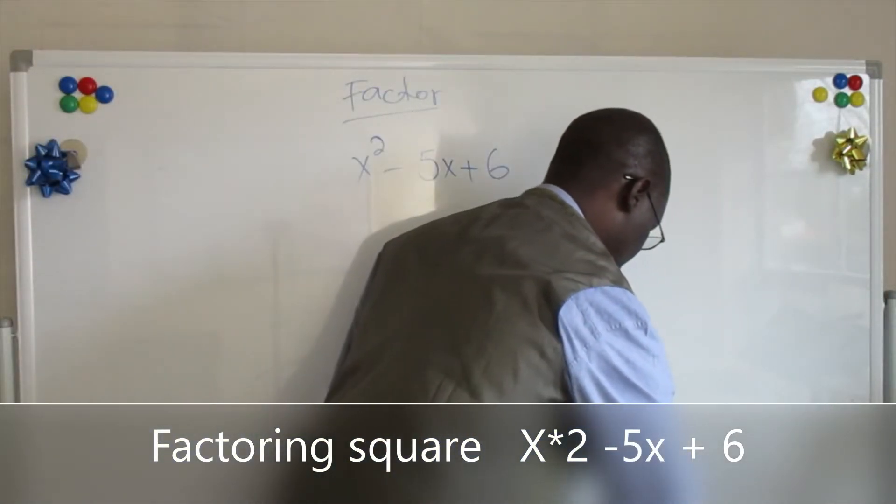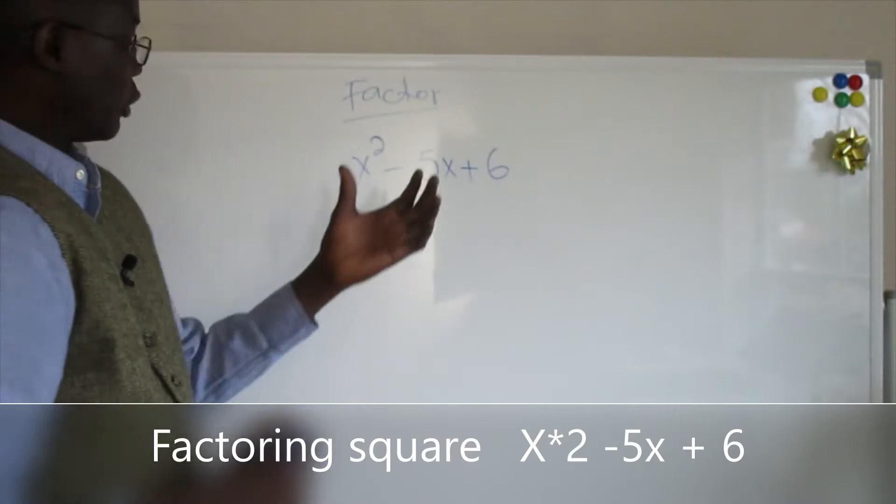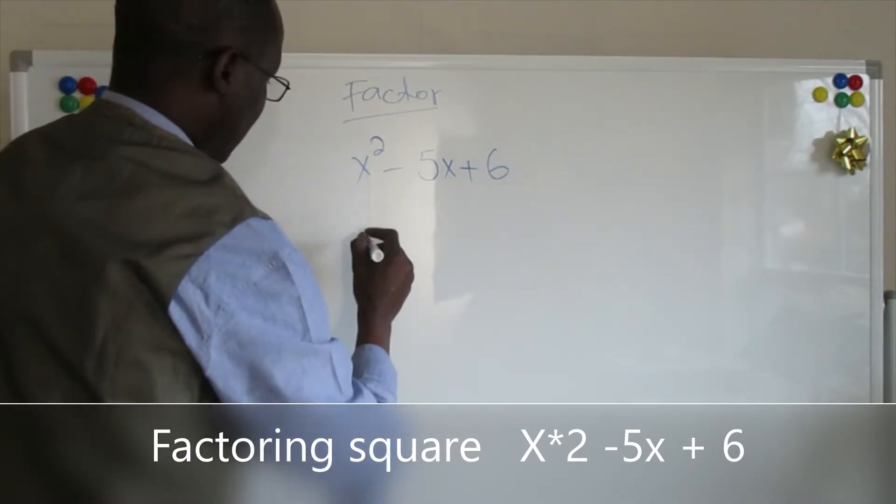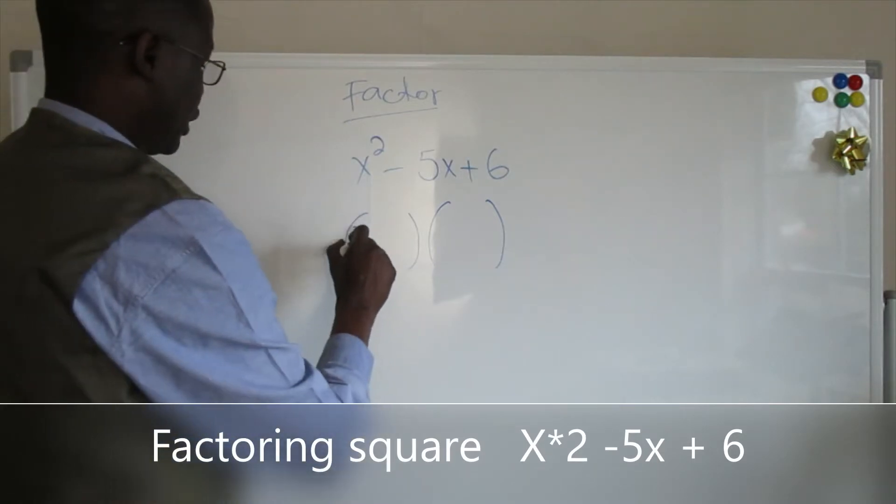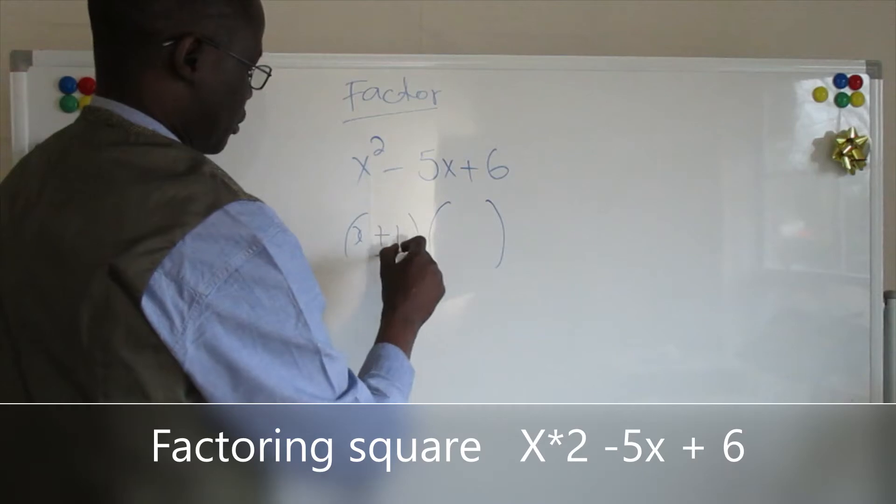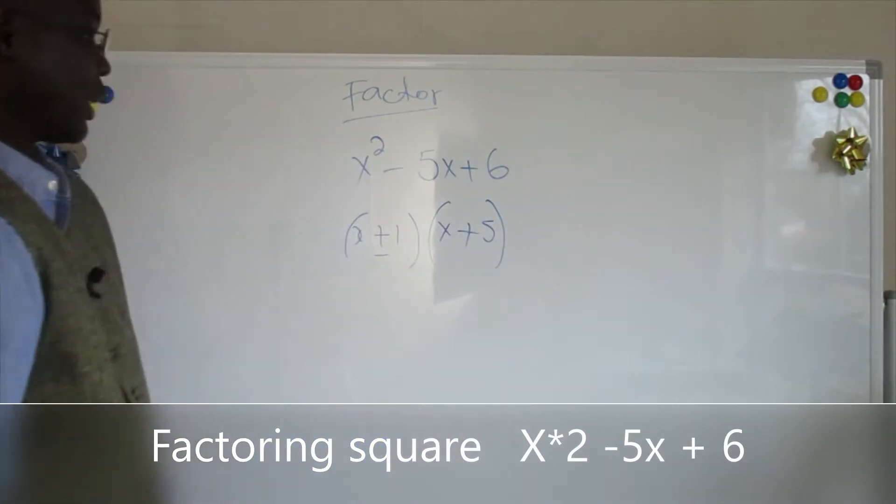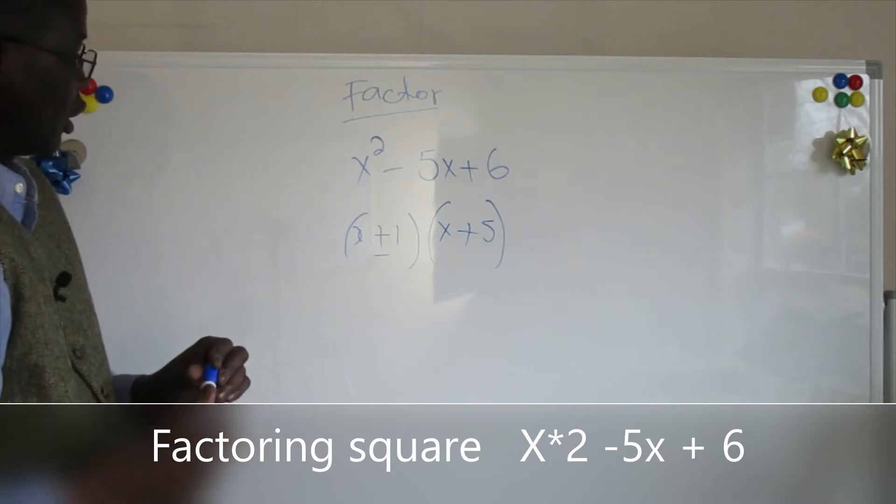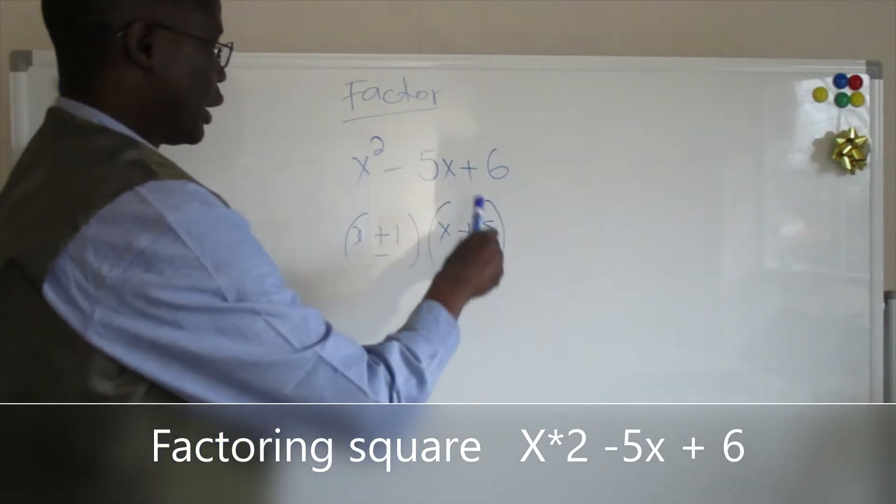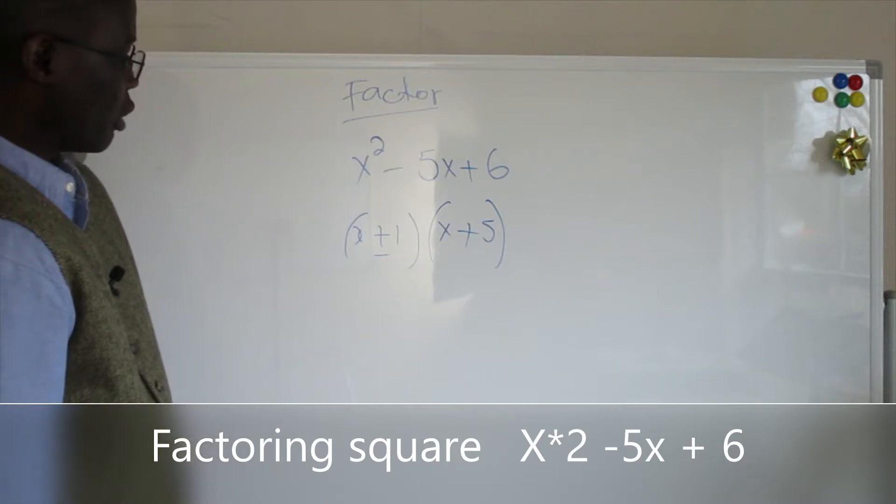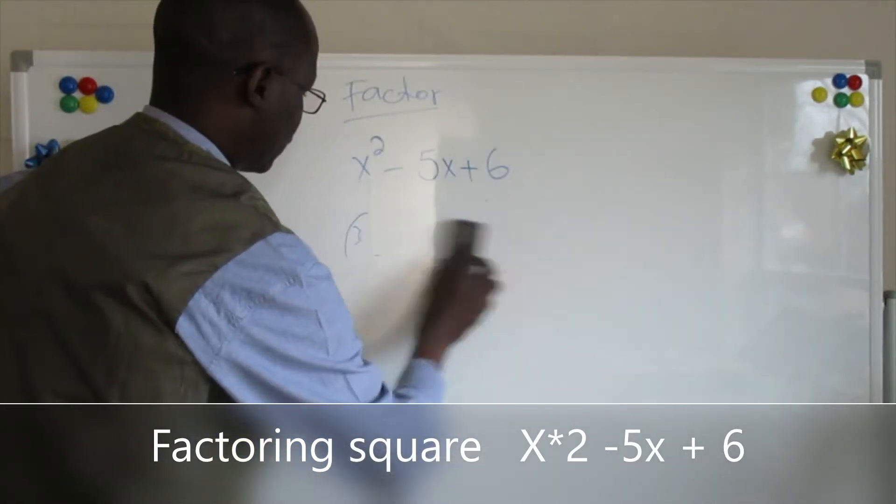So if you understand the concept, the question wants you to put this example in the form like this. So you should have x here and a number here plus or minus and some number here. And what I want you to learn today is how you solve this type of problem.